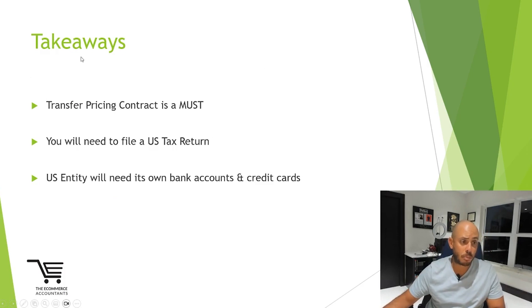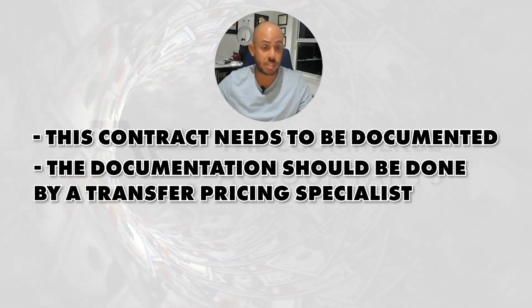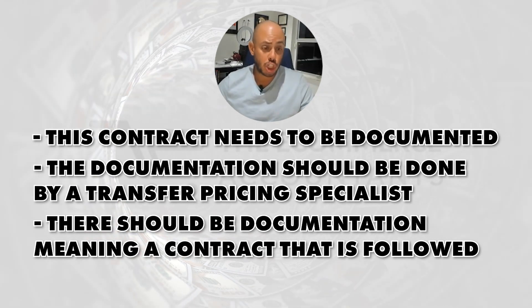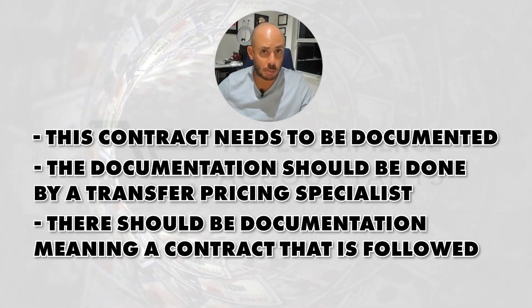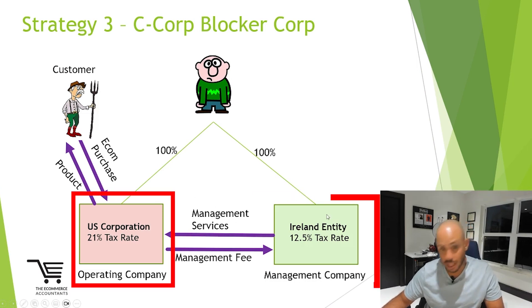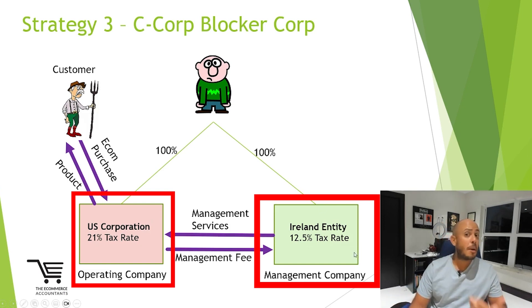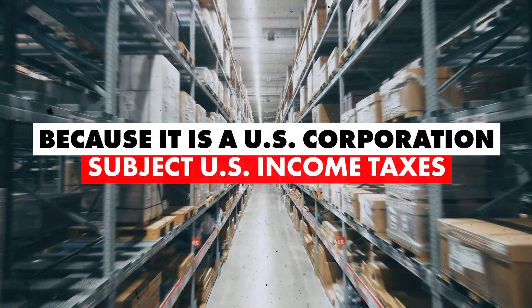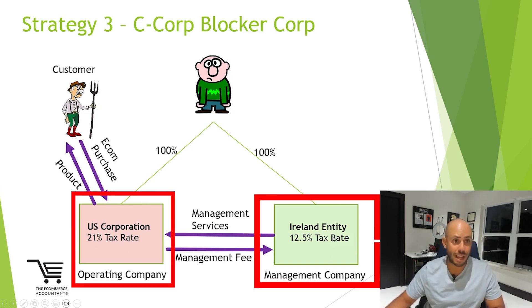The key takeaways here: a transfer pricing contract is a must. This contract needs to be documented, and the documentation should be done by a transfer pricing specialist. There should be a contract that is followed, and whatever the terms are — for example, if the contract says the U.S. company pays the Irish entity 10% of profits — you should be calculating profits, multiplying by 10%, and paying pursuant to the terms of that contract. You will also need to file a U.S. tax return for the U.S. corporation, since it is subject to U.S. income taxes. Lastly, the U.S. entity will need its own bank account and credit cards.